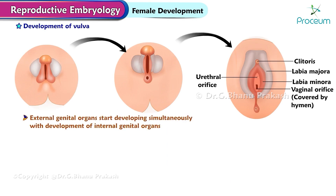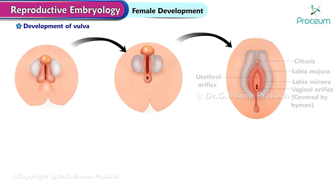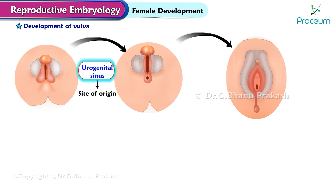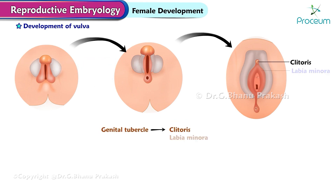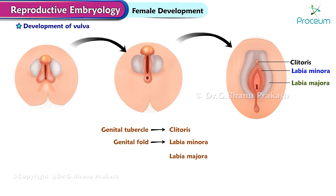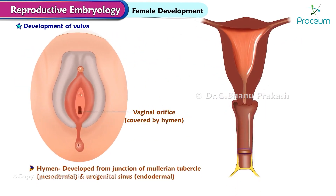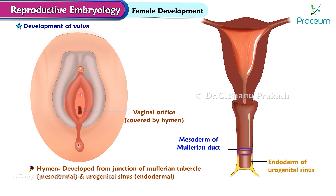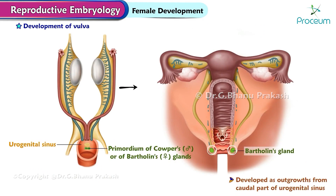Development of the vulva: the external genital organs start developing almost simultaneously with the development of the internal genital organs. The site of origin is from the urogenital sinus. The clitoris is developed from the genital tubercle. The labia minora are developed from the genital folds. The labia majora are developed from the genital swellings. The hymen is developed from the junction of the Müllerian tubercle (mesodermal) and the urogenital sinus (endodermal). Bartholin's glands are developed as outgrowths from the caudal part of the urogenital sinus and correspond to the bulbourethral glands of the male.